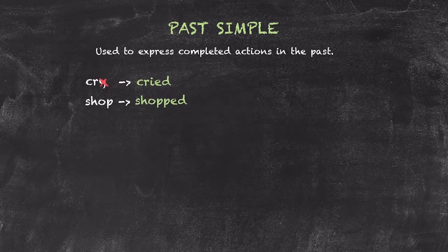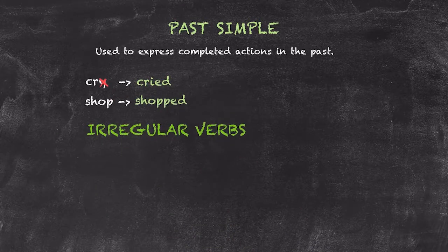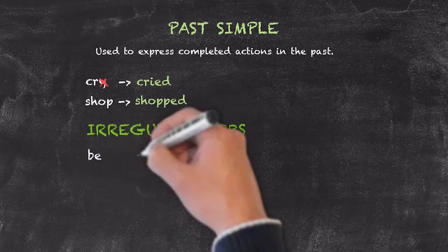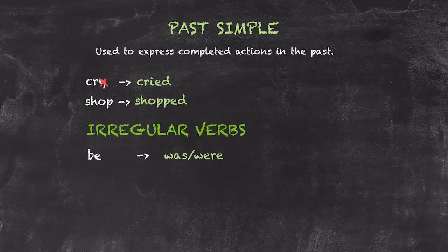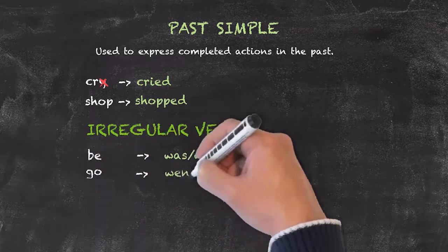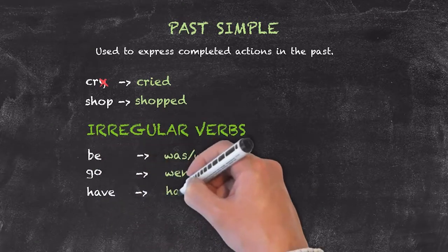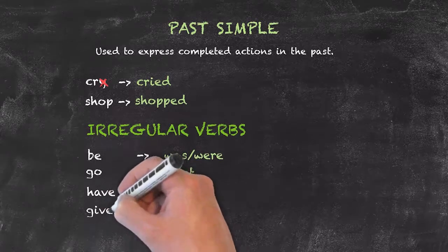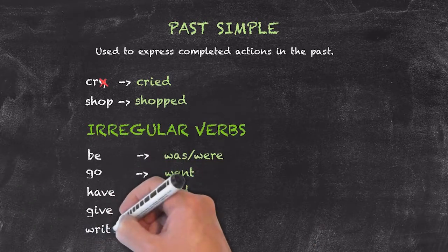Our irregular verbs change their form altogether. So a few examples would be: be, changing to was or were, depending on the subject of the sentence. Go, to went. Have, to had. Give, to gave. Write, to wrote.